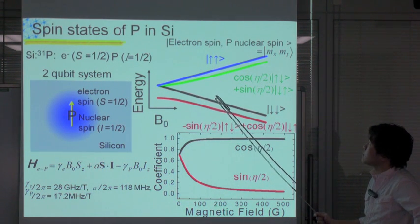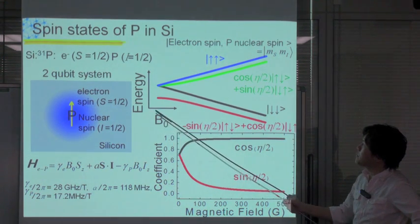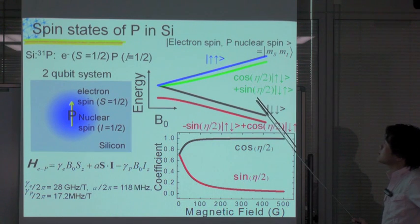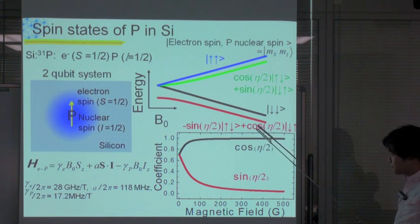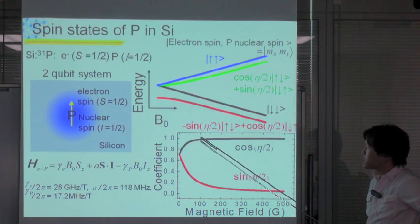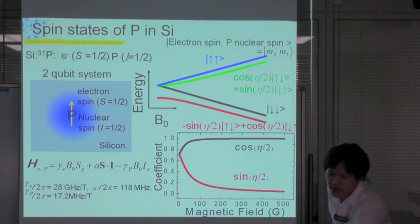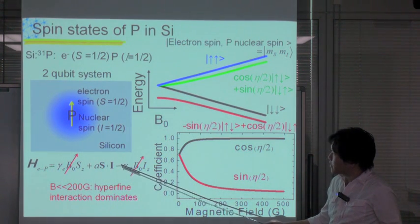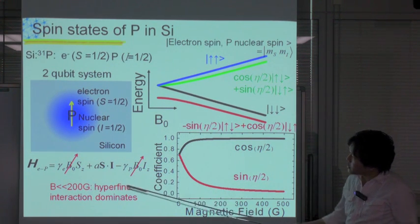This figure shows the spin state of phosphorous in silicon under the external magnetic field. The horizontal axis is magnetic field and the vertical axis is energy. The spin states are described as: |↑↑⟩, cosine(η/2)|↑↓⟩ + sine(η/2)|↓↑⟩, −sine(η/2)|↑↓⟩ + cosine(η/2)|↓↑⟩, and |↓↓⟩. The angle η is between the external applied magnetic field direction and the actual electron and nuclear spin precession axis. η also has magnetic field dependence, because the spin Hamiltonian is dominated by the contact hyperfine term rather than the Zeeman term at low magnetic field, especially below 200 Gauss.